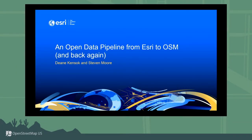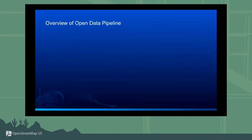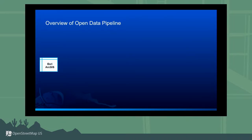If you've been to the sessions on Rapid or Daylight earlier in this session, this will kind of build on that story a little bit and hopefully connect a few dots for you about the work that Esri has been doing. We are building an open data pipeline into OpenStreetMap and we have been here for the past few years partnering with a few organizations. I thought I'd start off with kind of a conceptual diagram of how that works.